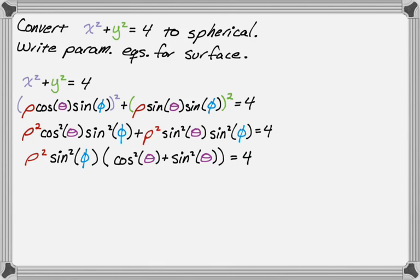So the thing in parentheses there, cosine squared plus sine squared, that's just equal to one. That's the Pythagorean identity. So this is one, which means we're down to rho squared sine squared of phi is equal to four.